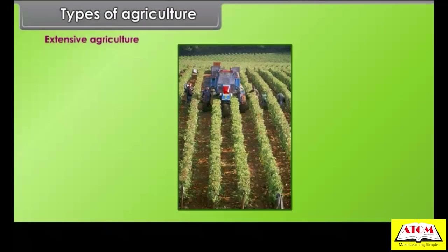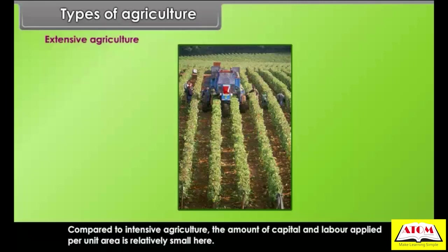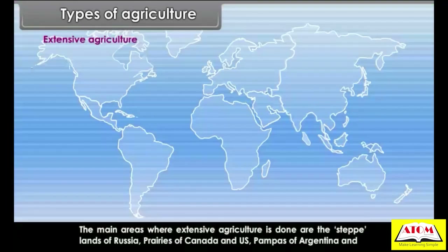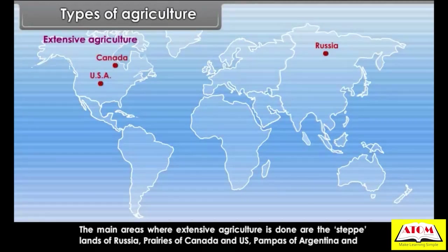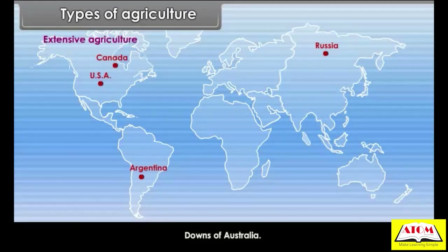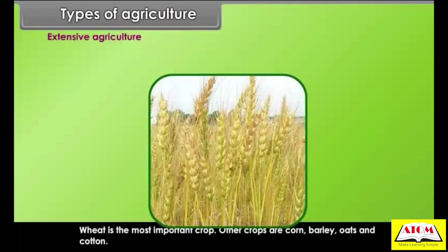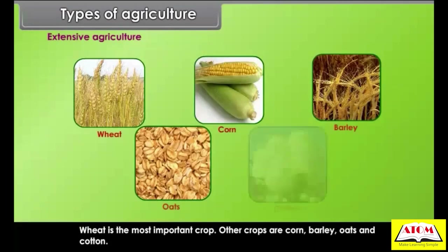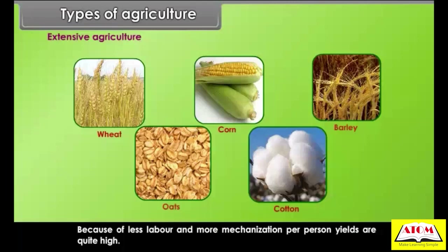Extensive agriculture: compared to intensive agriculture, the amount of capital and labor applied per unit area is relatively small. The main areas where extensive agriculture is practiced are the steppe lands of Russia, prairies of Canada and the US, pampas of Argentina, and downs of Australia. Wheat is the most important crop; other crops are corn, barley, oats and cotton. Because of less labor and more mechanization, per person yields are quite high.